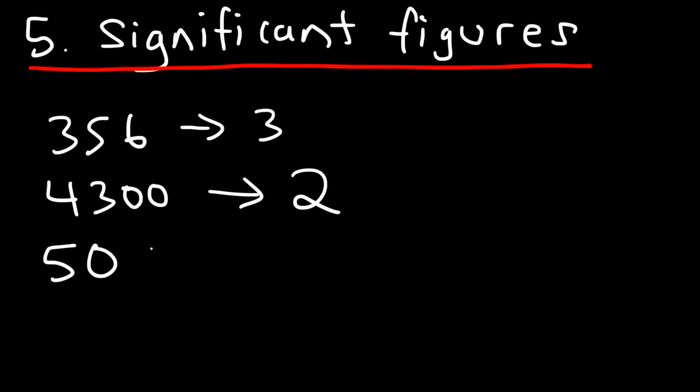If I had 50,400, the zeros that exist between two non-zero numbers are significant. So there are three significant figures.